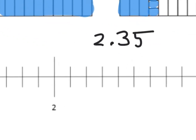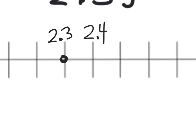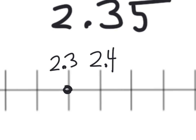Here is the distance between two and three. Two point three is going to live right here — two and one tenth, two and two tenths, two and three tenths. There is two point three, and here is two point four. To place two and three tenths plus five hundredths, I need to zoom in further and cut this distance into ten equal pieces: one, two, three, four, five — and move over five of those pieces.